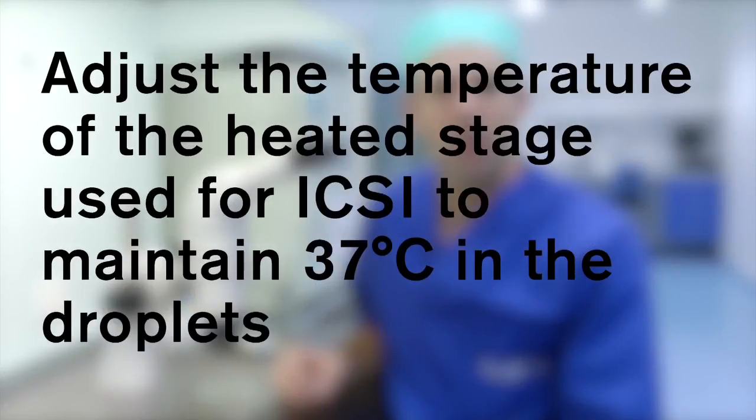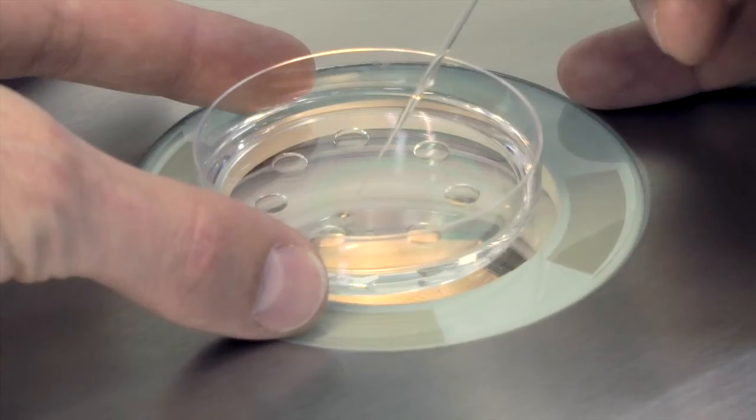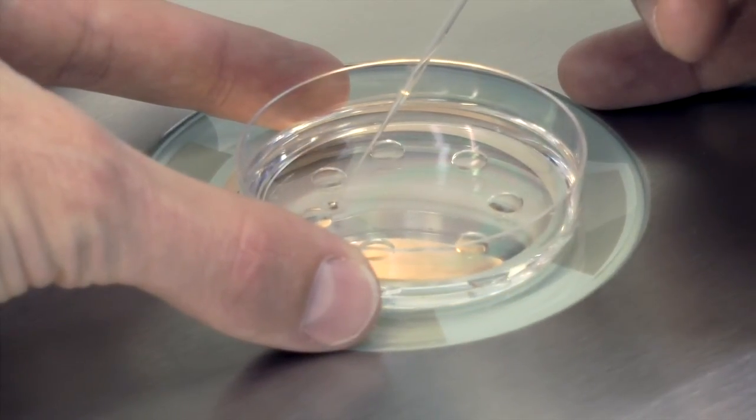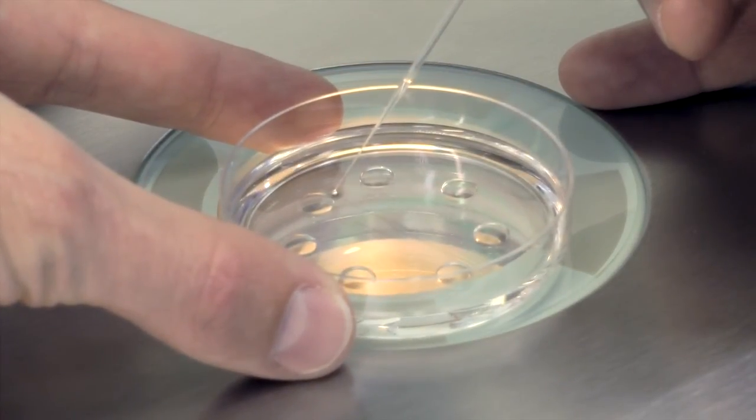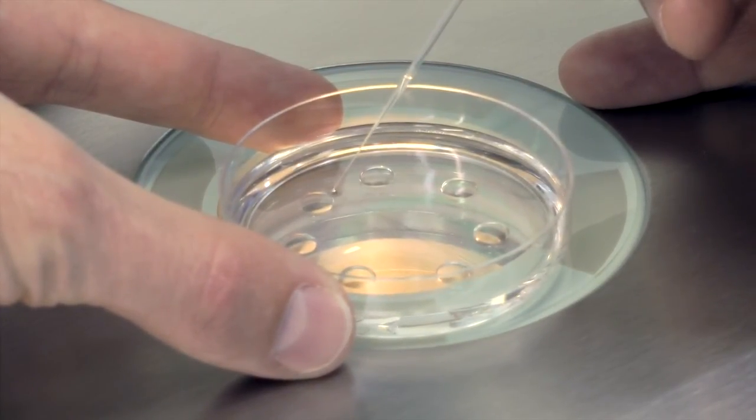Adjust the temperature of the heated stage used for ICSI to maintain 37 degrees Celsius in the droplets. After ICSI, wash the injected oocytes several times in G1 Plus droplets and then culture in fresh G1 Plus micro droplets overnight at 37 degrees Celsius and 6% CO2.